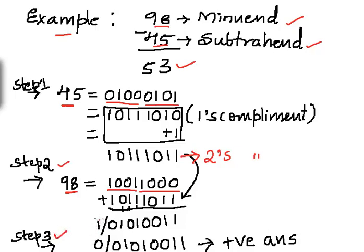In step 3, we handle the carry. If a carry is generated, we ignore it and the answer is a positive value. Here the carry is 1, so we ignore it, and the answer is 00110101 — that is 0101 which equals 5 and 0011 which equals 3, so the answer is 53. This matches our original subtraction, confirming the two's complement subtraction. Thank you.